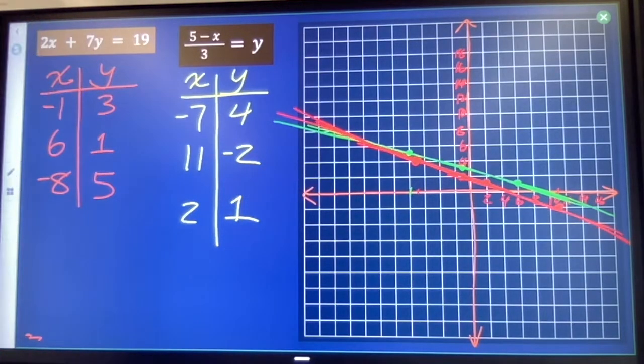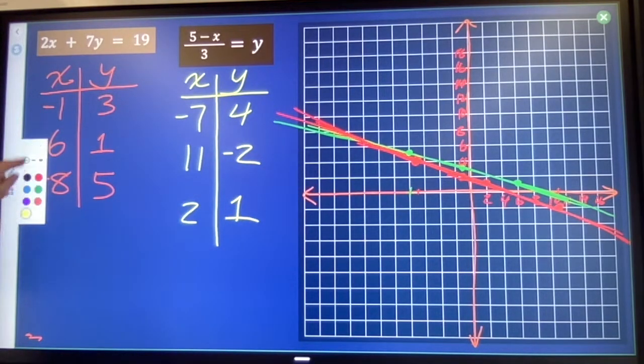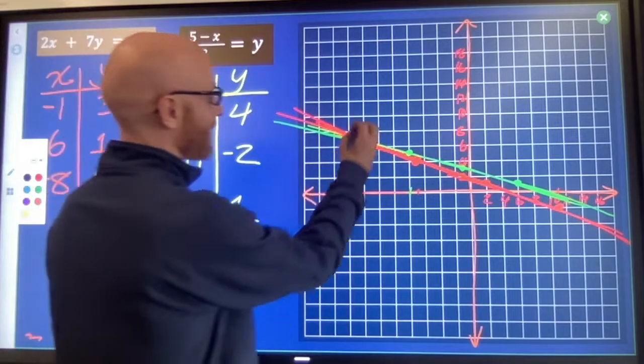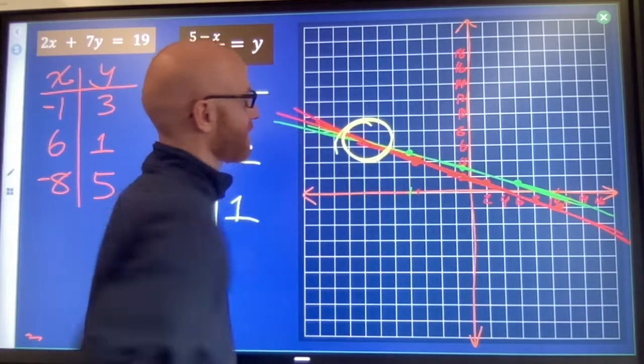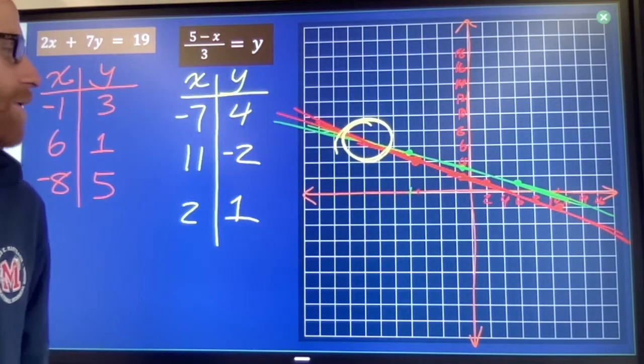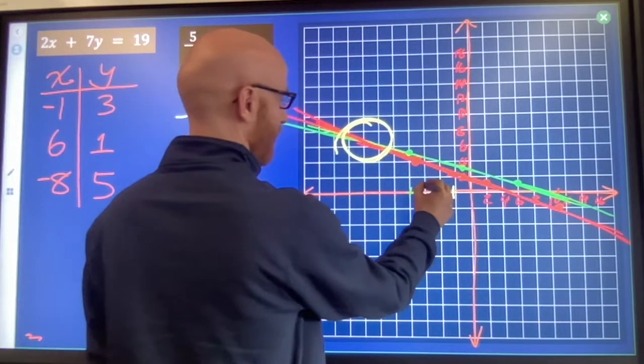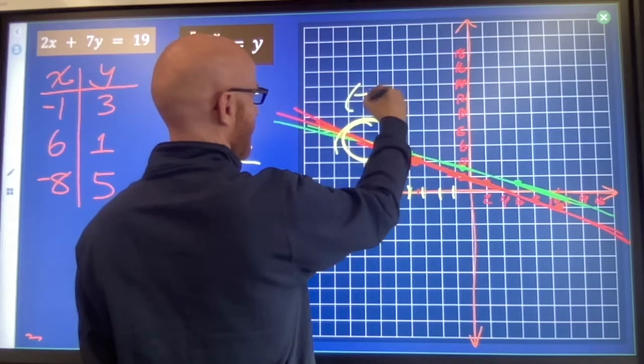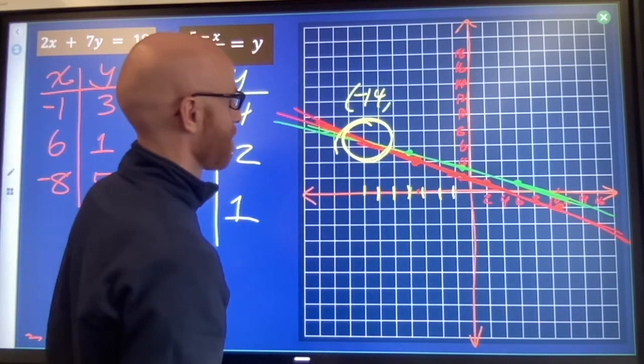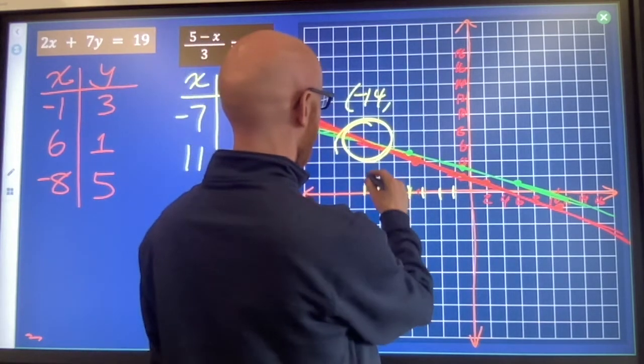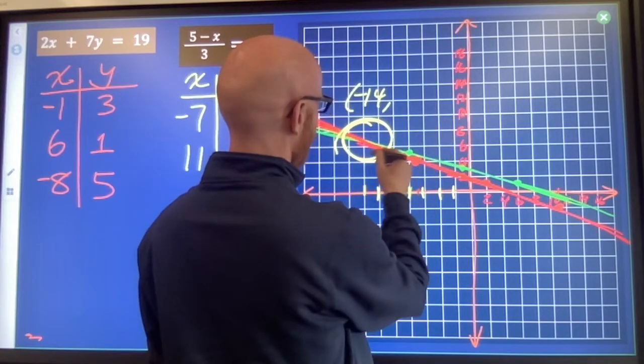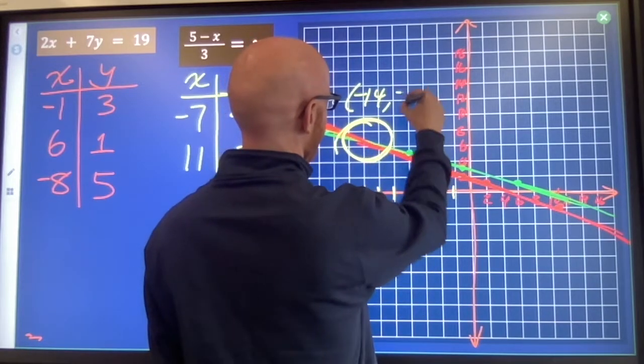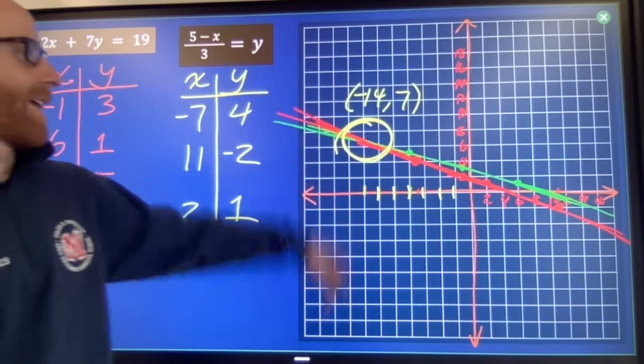It's looking like the point that both of these lines share is somewhere around here. Somewhere in here, I'm going to call it negative 2, 4, 6, 8, 10, 12. So negative 14, 7. Let's call it negative 14, 7. Somewhere around there.